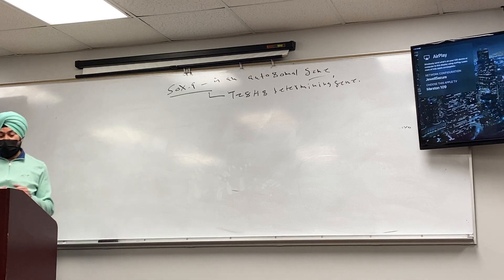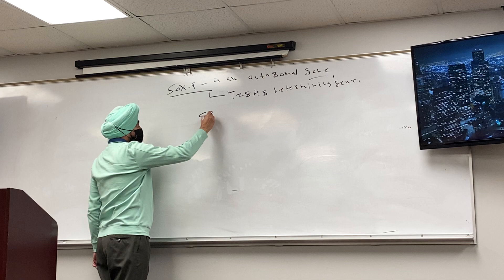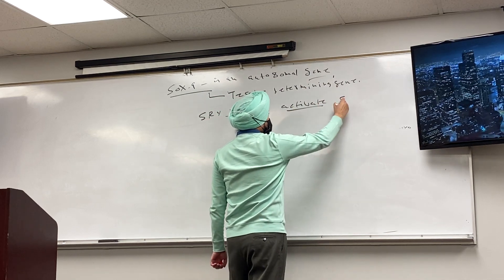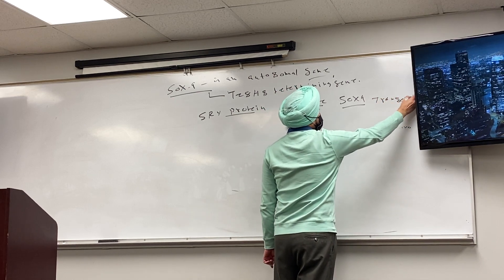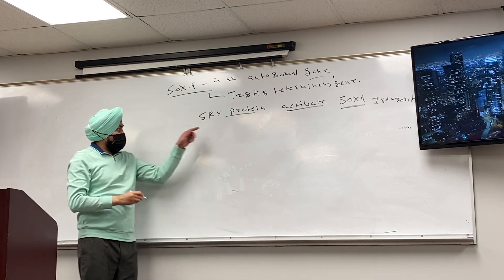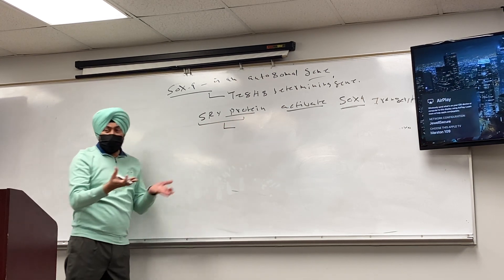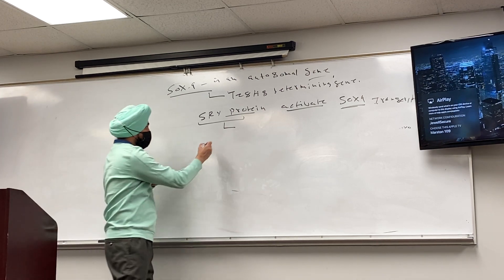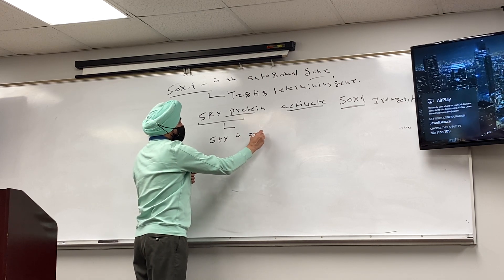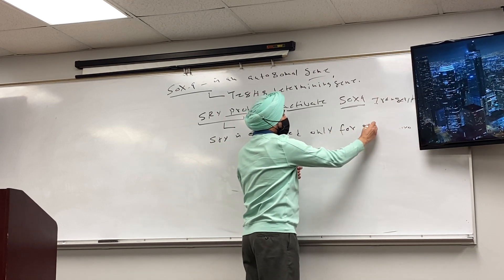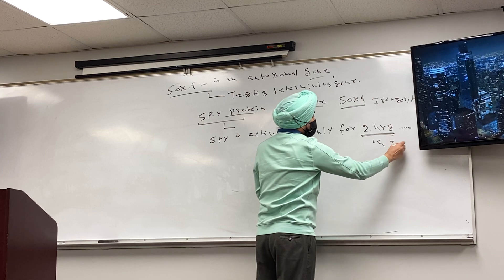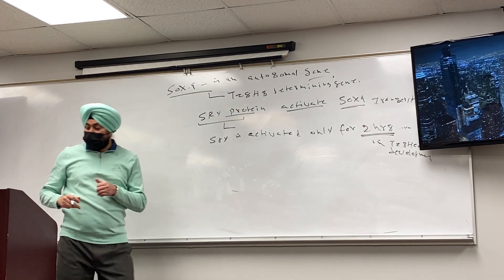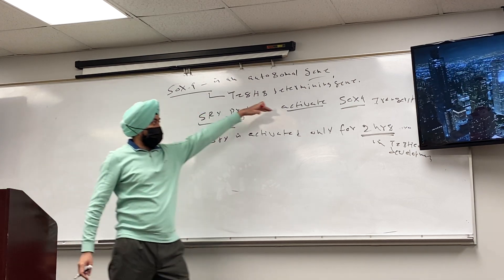So what is the function of SRY? SRY protein activates SOX9 transcription. Now SRY protein is produced by the SRY gene when it is activated. SRY gene is not activated throughout — it is activated only for two hours in testicular development. So it's active just for two hours and immediately starts production of SOX9.